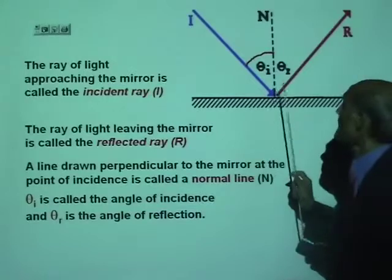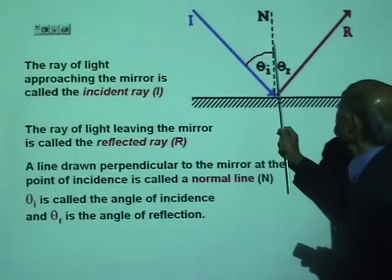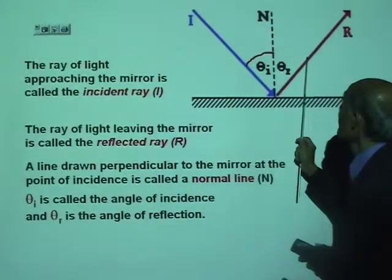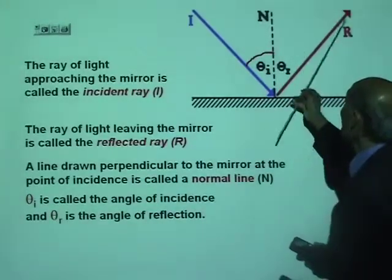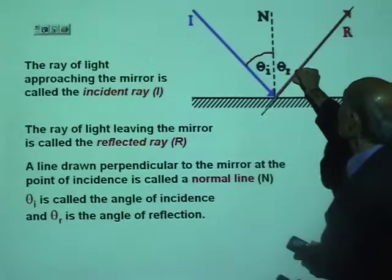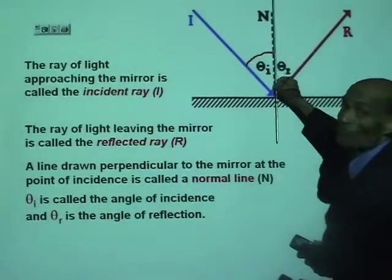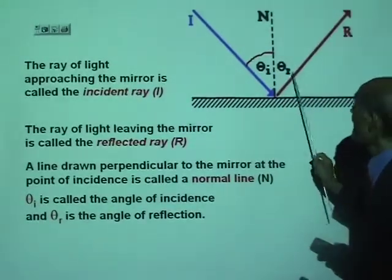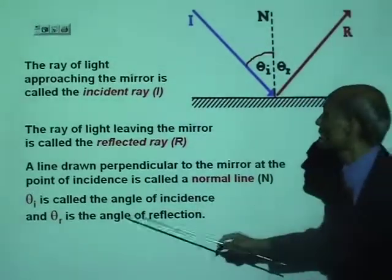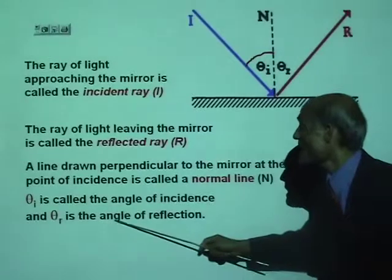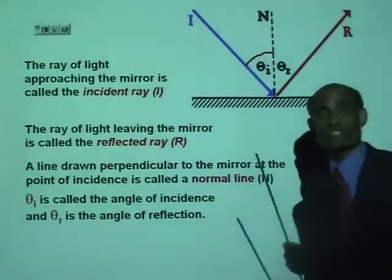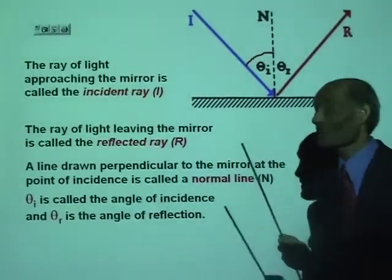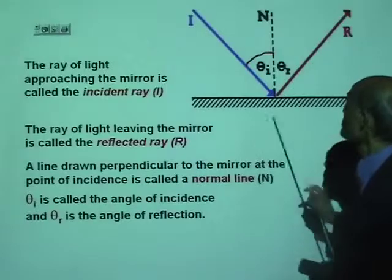What will you call this angle? That's the angle made by the reflected ray with the normal, and that angle is called the angle of reflection.